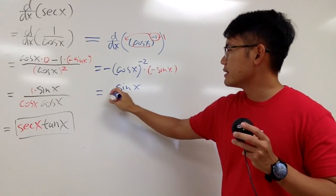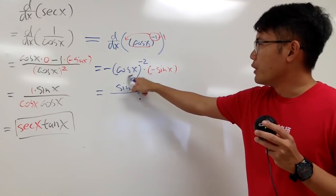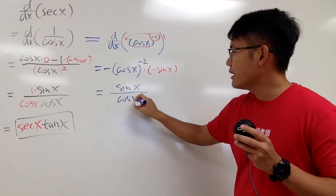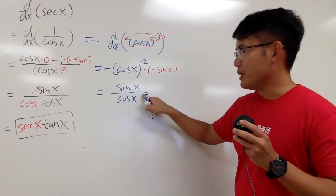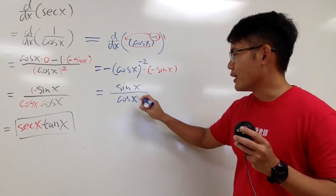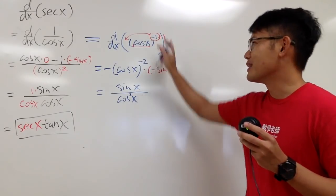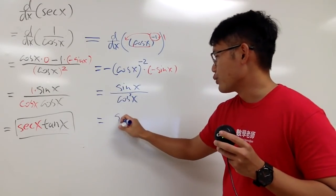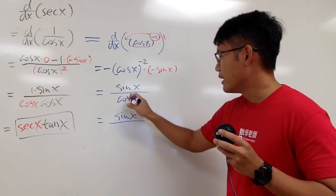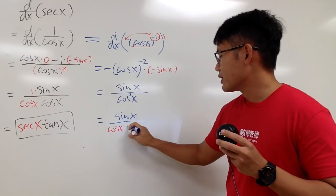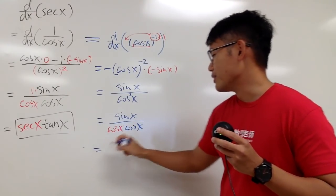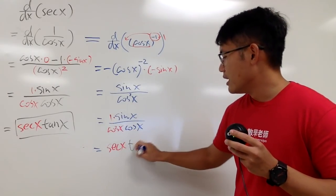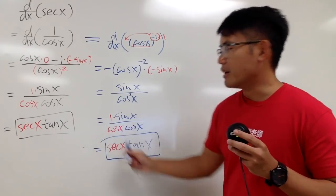So we have sine x on the top, and we bring the cosine x to the denominator raised to the positive 2 power. This gives us sine x over cosine x squared, which we can write as cosine x times cosine x. So 1 over cosine x is secant x, and sine x over cosine x is tangent x. Of course, we get the same answer: secant x times tangent x.